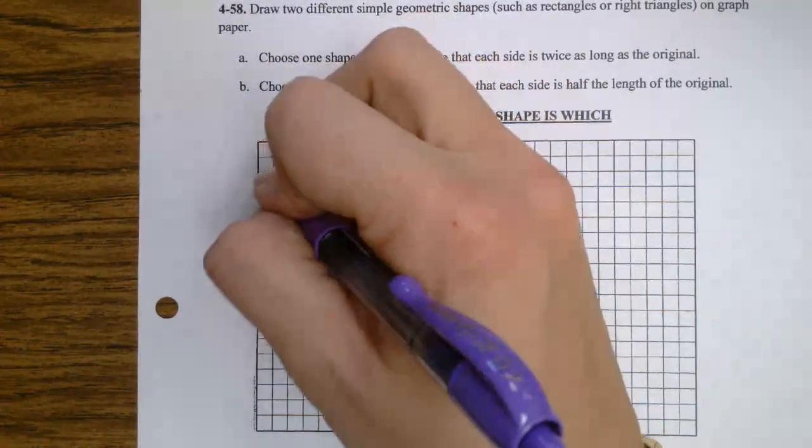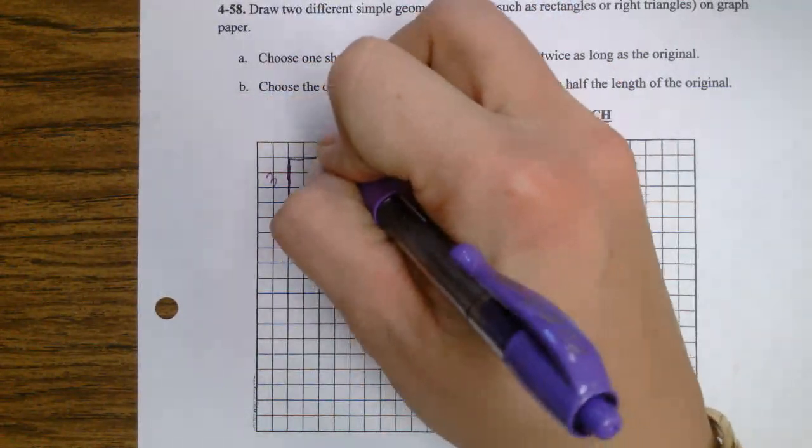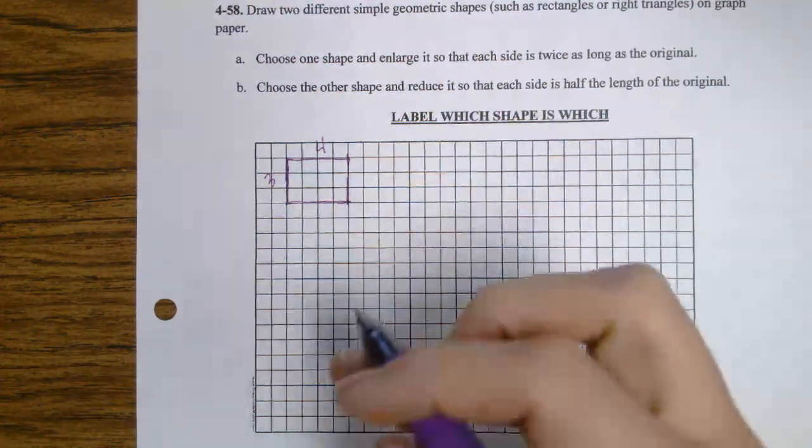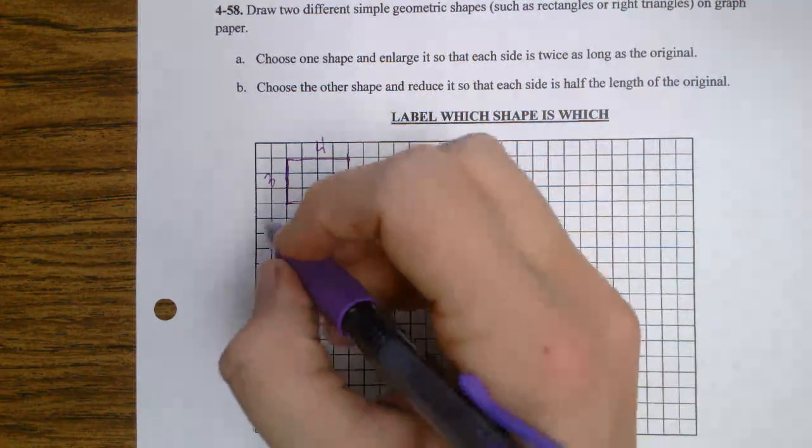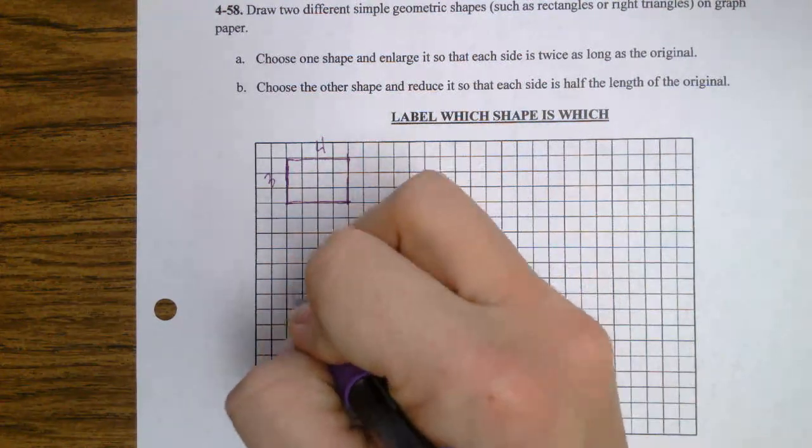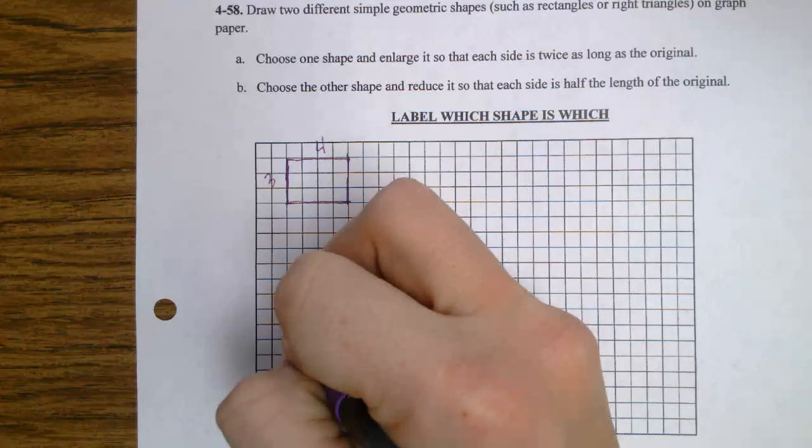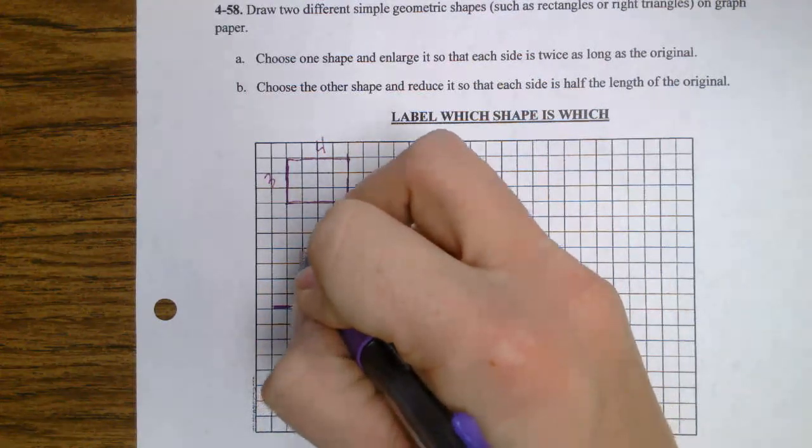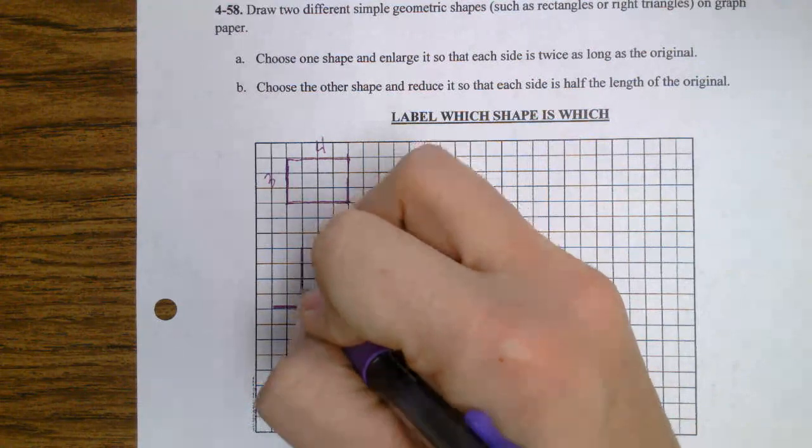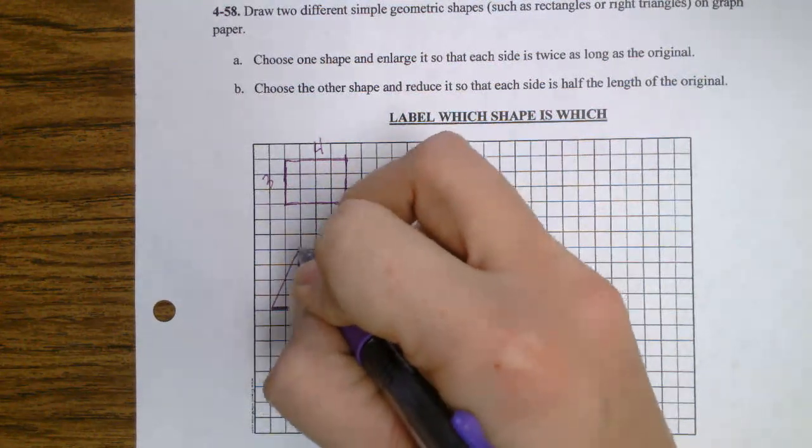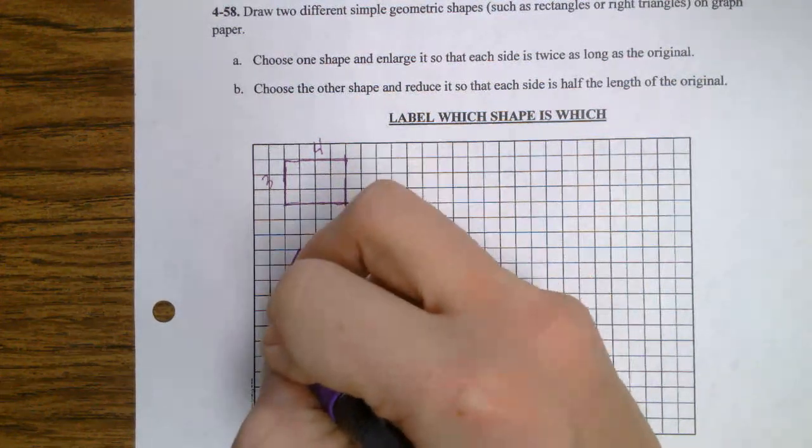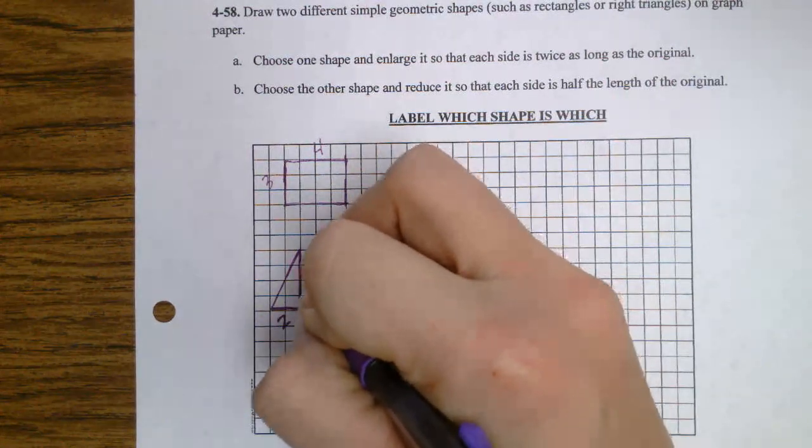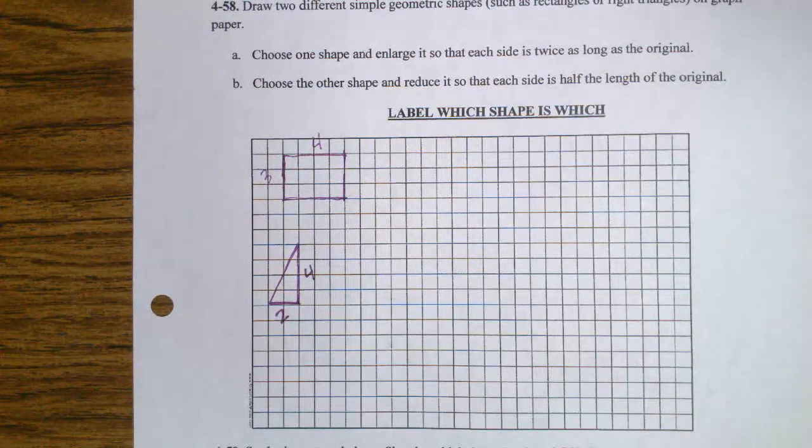So remember yesterday I said we need to label our rectangles. I need to know these sides. I'm not going to count them. So one of my shapes is going to be the rectangle and the other one I'm going to do a triangle. I'm going to go 2 and 4. It's a right triangle. So this is the base is 2 and the height is 4.